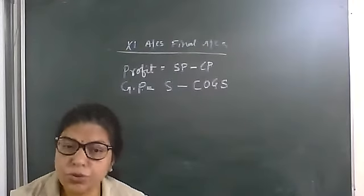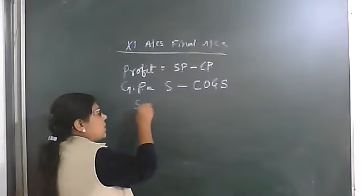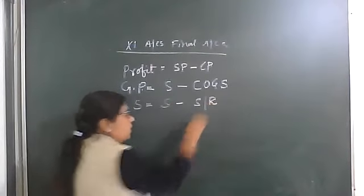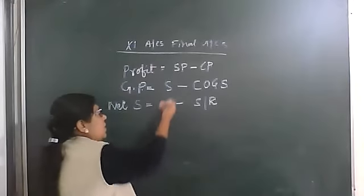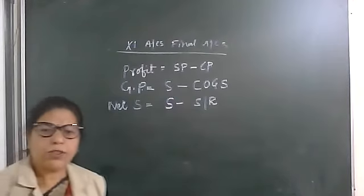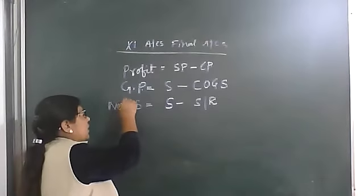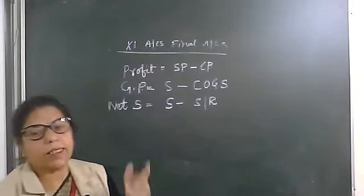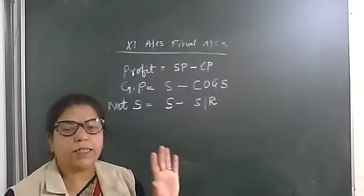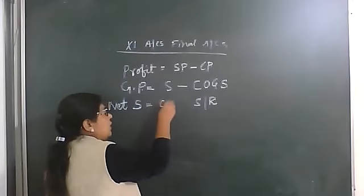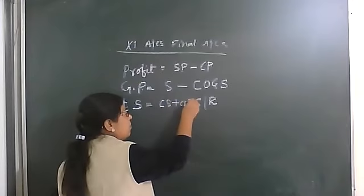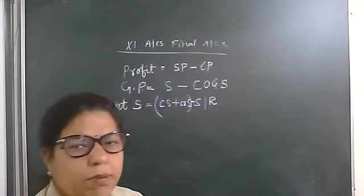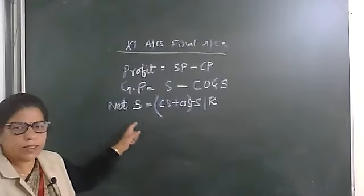Now the question is how to calculate sales. Net sales equals sales minus sales return. Here, sales means cash sales plus credit sales. So net sales equals cash sales plus credit sales minus sales return. These two will be added, and sales return is subtracted to get net sales.